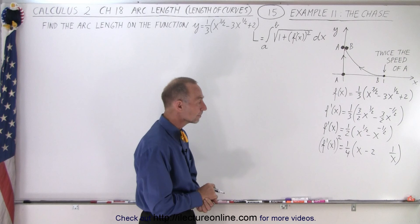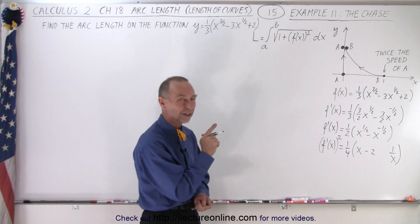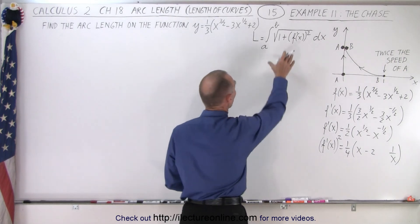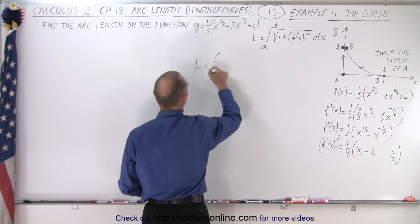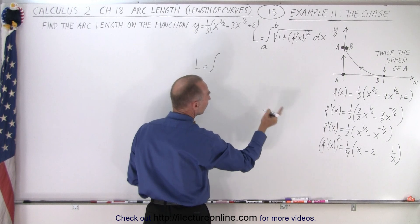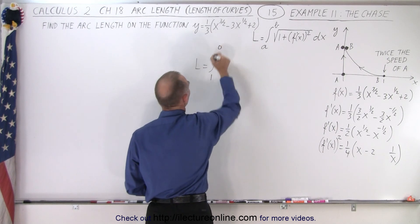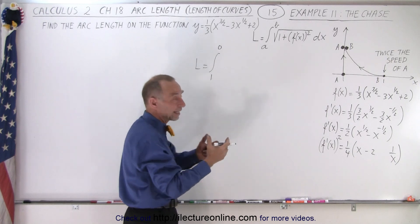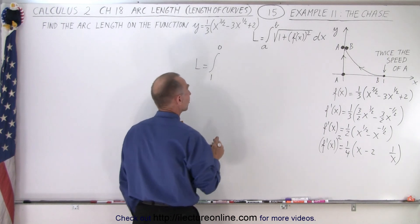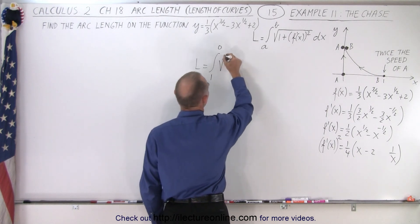All right, now we should look at that and go, that makes sense because I think I know what's going to happen when we plug it in here. So we have the length is equal to the integral. We're going to integrate from x equal one to x equal zero. Doesn't matter if it's from zero to one or one to zero. If we get a negative answer, we just flip the limits around.